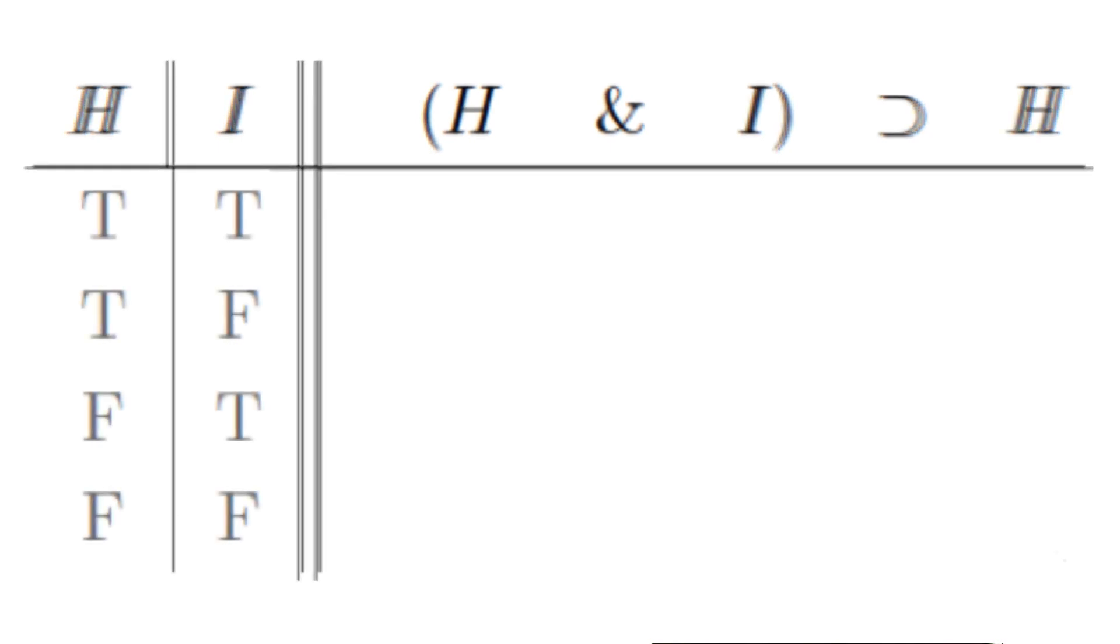We can start by writing out all the possible combinations of truth and falsity for H and I in the reference columns. But here's a caveat. To ensure that we cover all the combinations, we'll need a consistent method for arraying the truth values, like this.